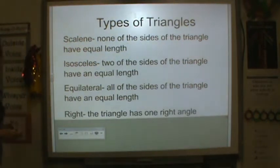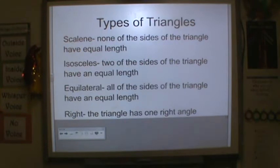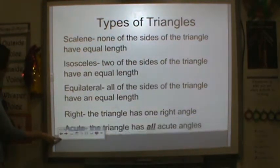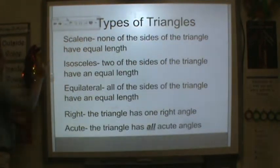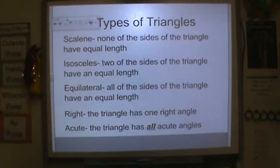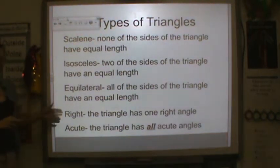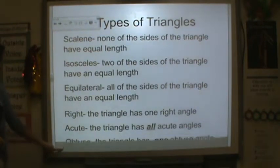Next we have a right triangle. In a right triangle, the triangle has only one right angle. An acute triangle has all acute angles — no right angles, no obtuse angles.